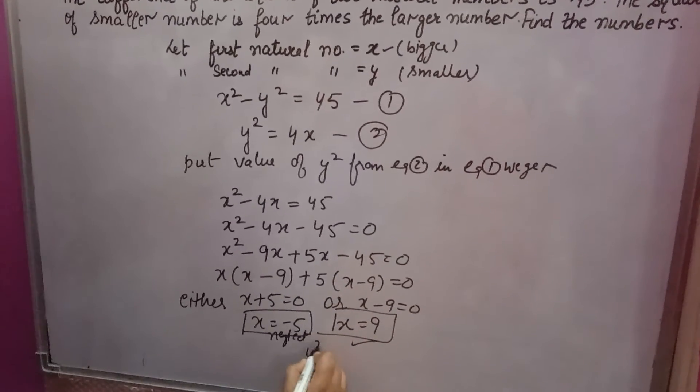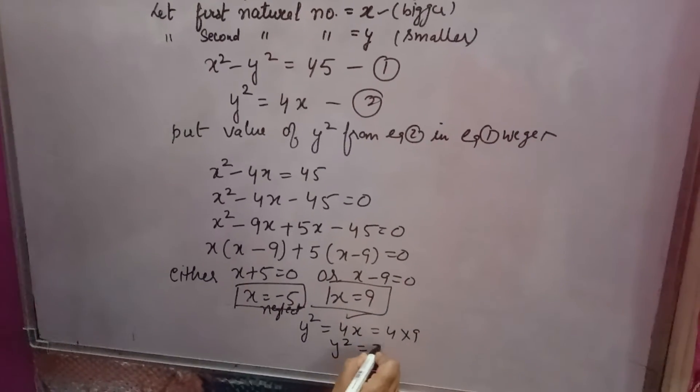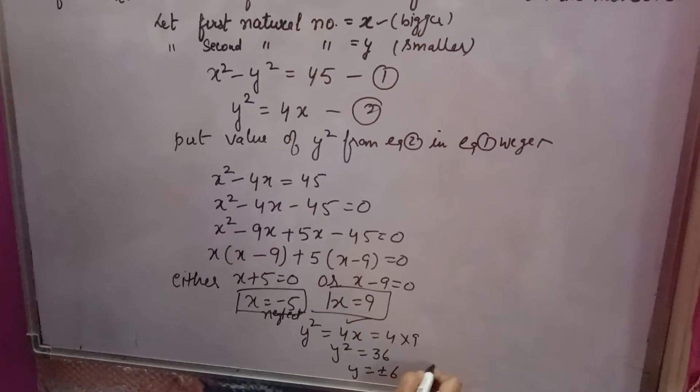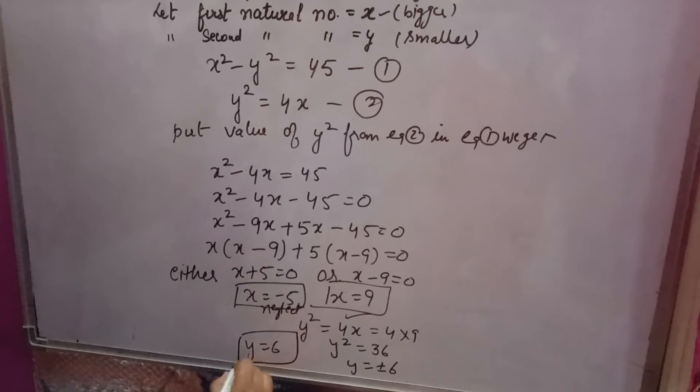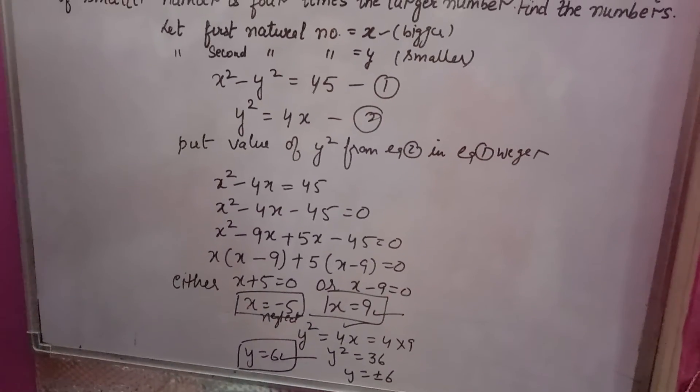Now y value we find. y square is equal to 4x means 4 into 9, so y square is 36. So y will be plus minus 6. Now again minus 6 you will neglect. y will come 6. So x is equal to 9 and y is equal to 6 is the answer. Thank you.